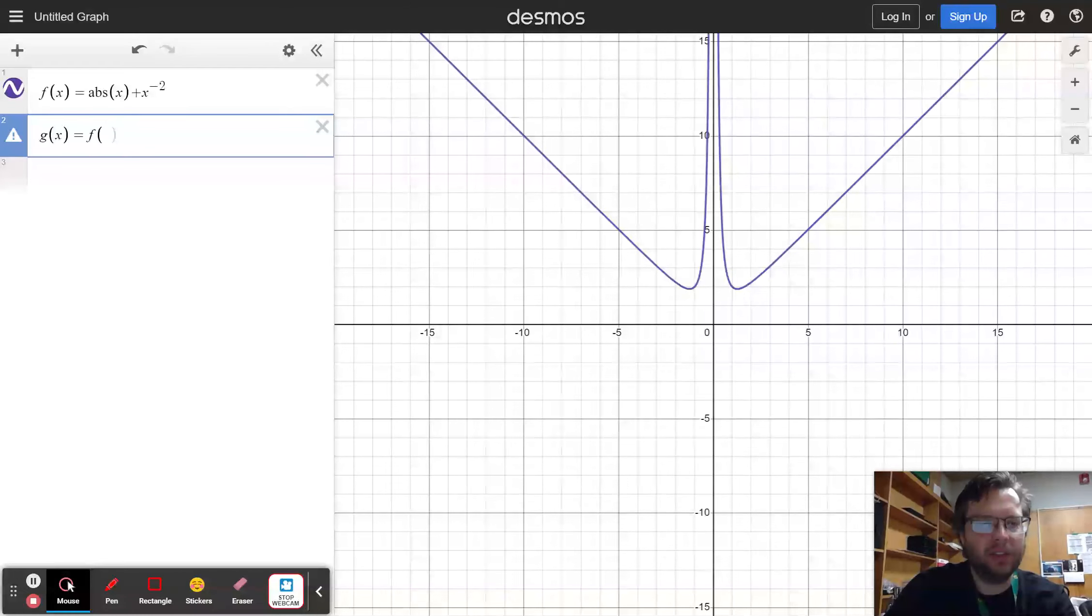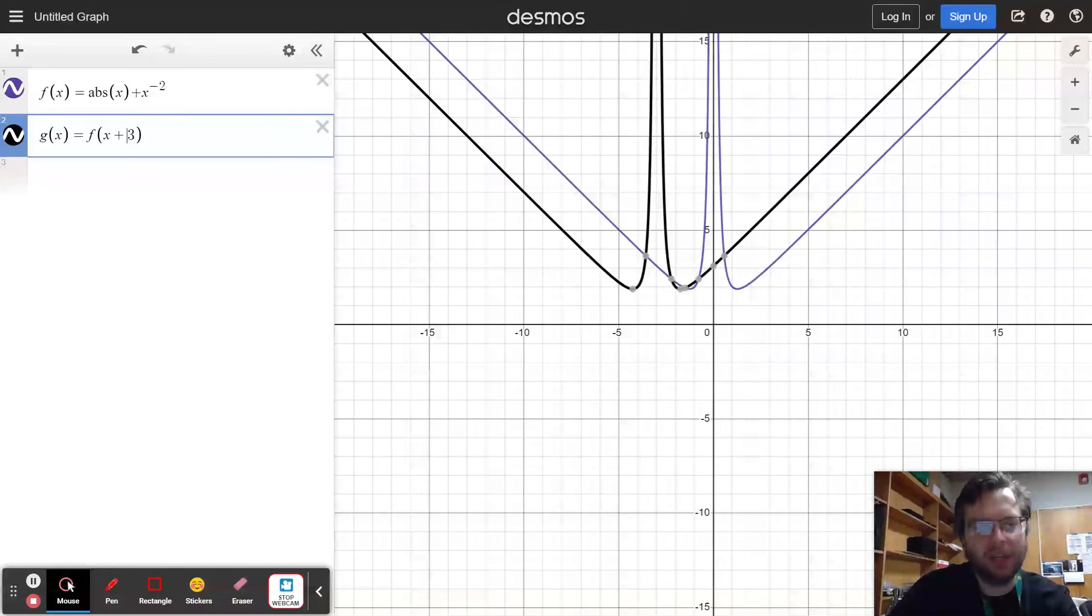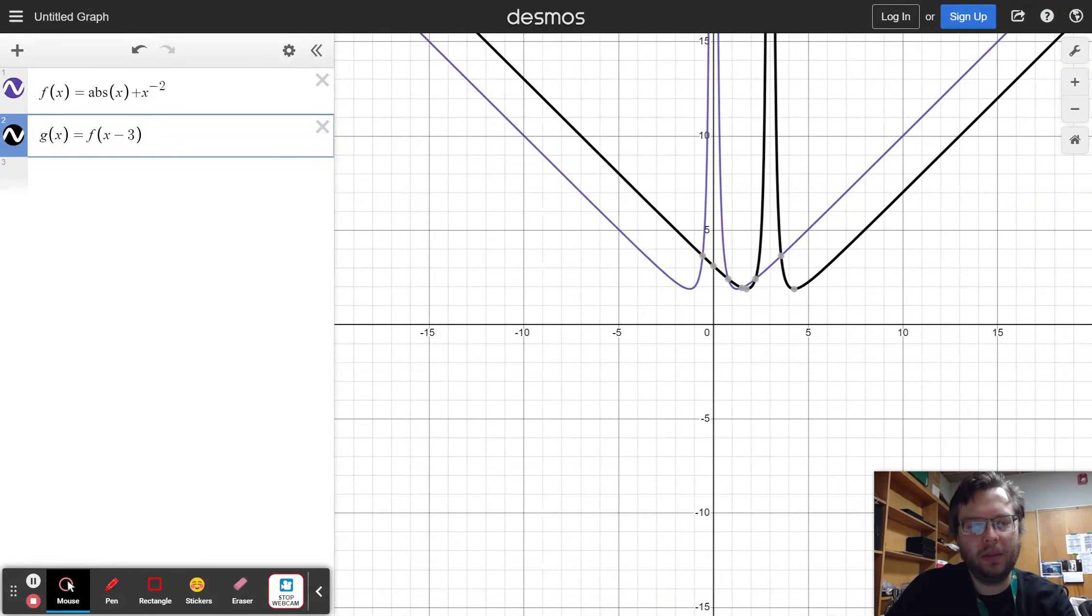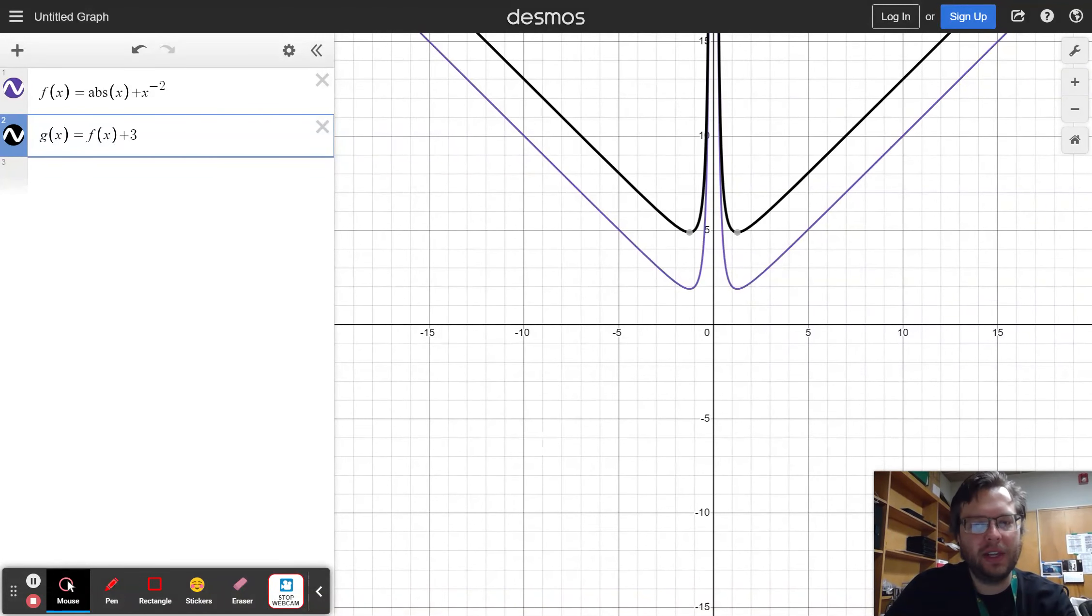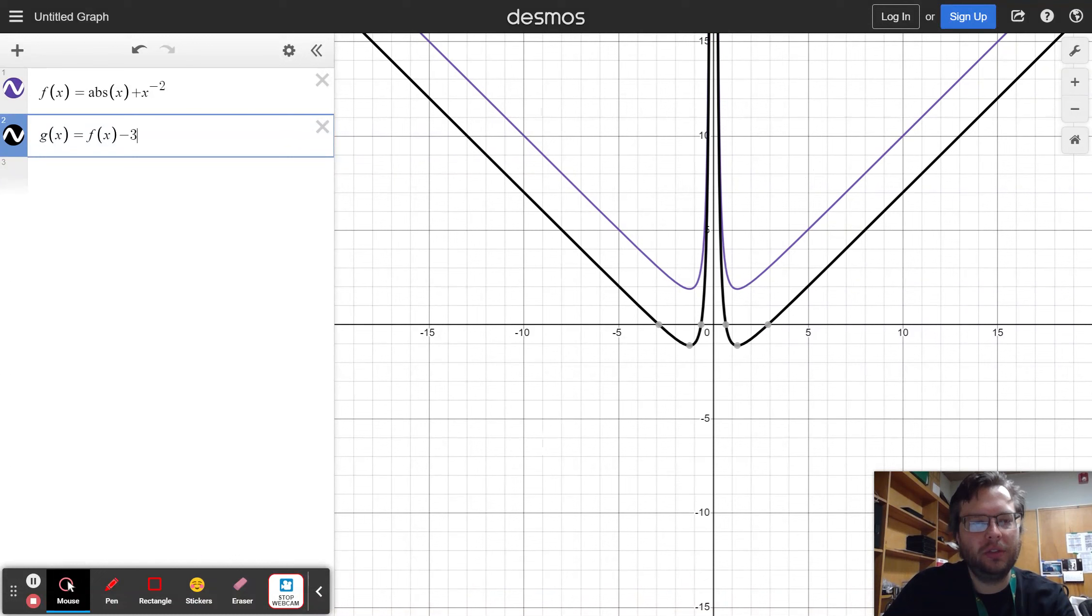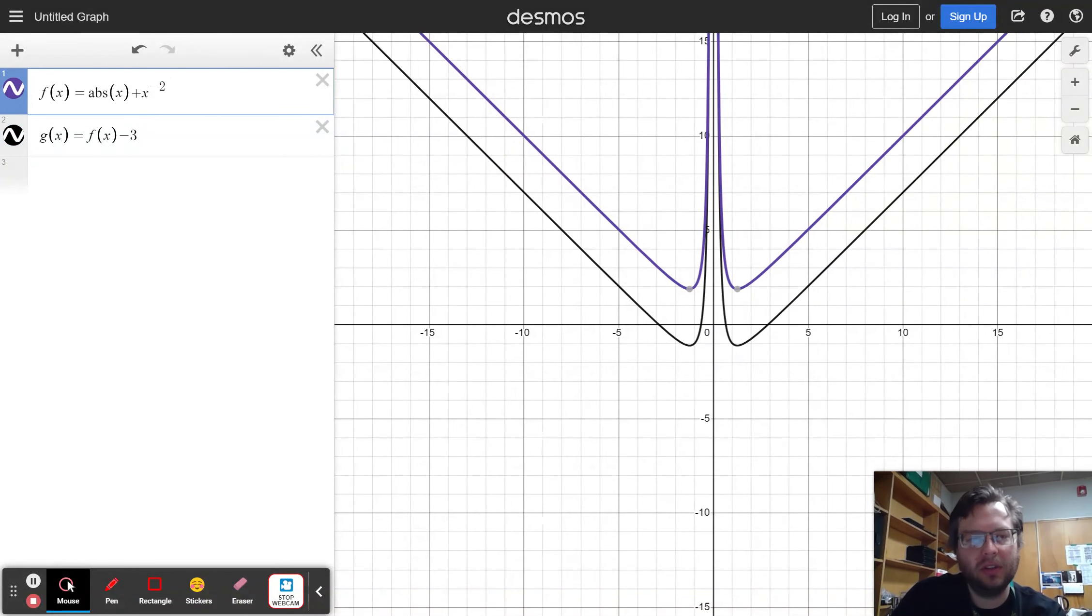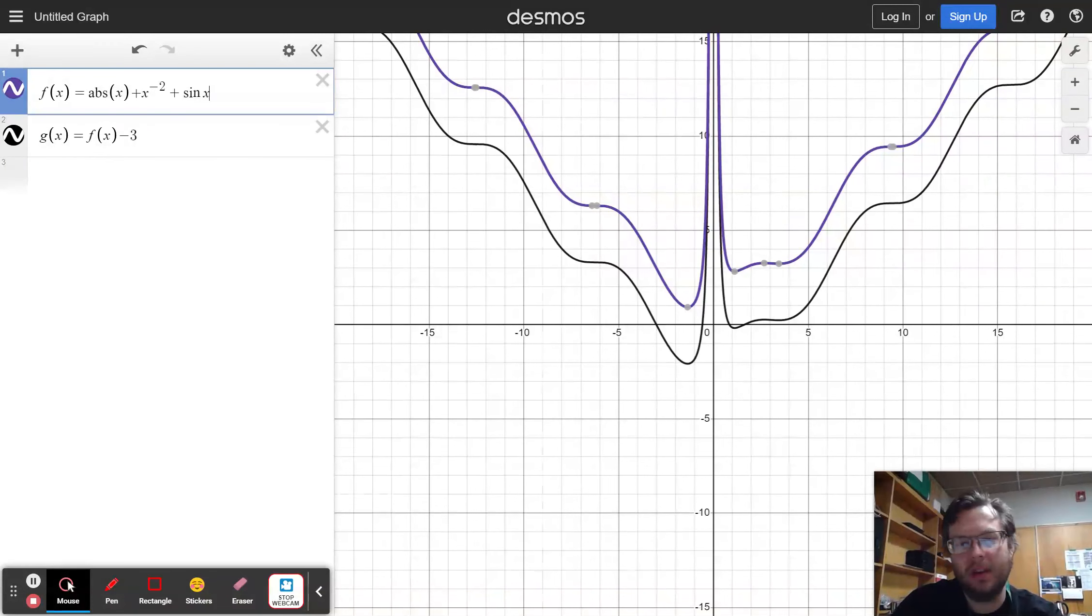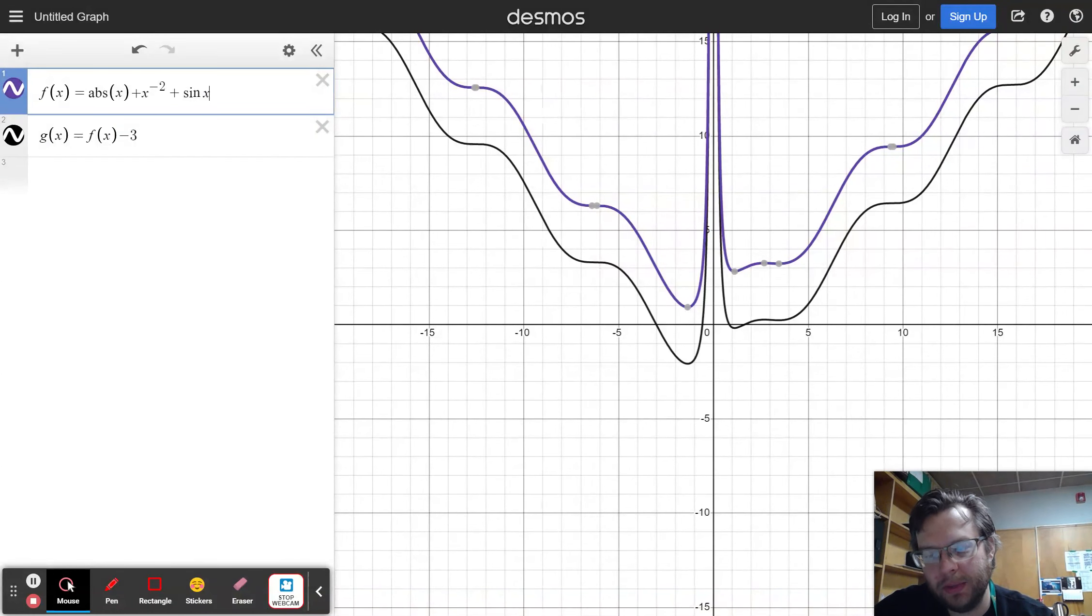That is related to your old function. And what we learned is that when you add it on the inside, it moved left. When you subtract it on the inside, it moved right. When you add it on the outside, it moved up. When you subtract it on the outside, it moved down. And that those plus or minus on the inside or outside did the same thing, even if I changed what the original graph was. So, that's the big idea.